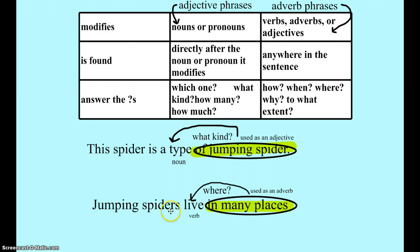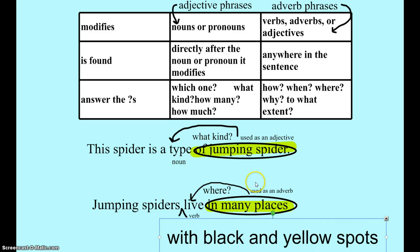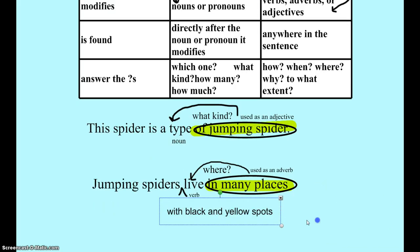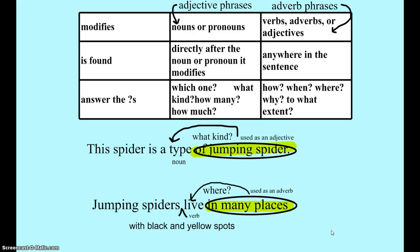We also went back and said, now that we know a prepositional phrase can describe nouns, what prepositional phrase could we add? We came up with: 'Jumping spiders with black and yellow spots live in many places.' So we could add prepositional phrases anywhere in the sentence to add more description. In this case, we're using it to describe a noun, so that prepositional phrase would be an adjective.